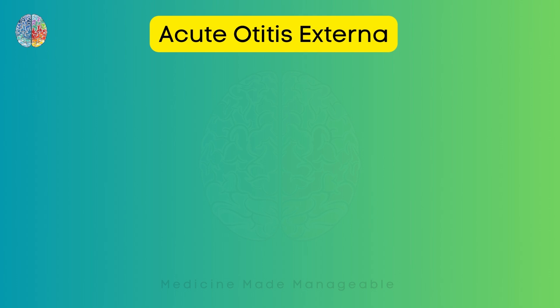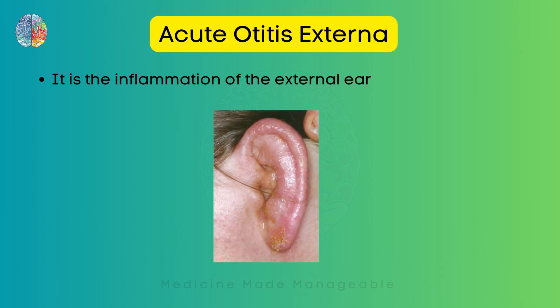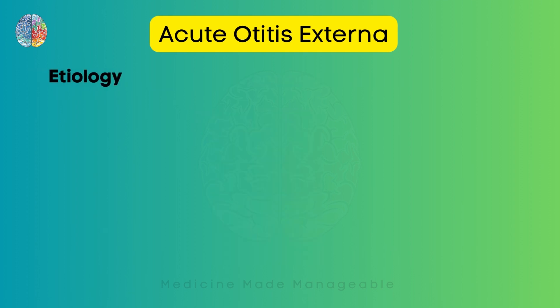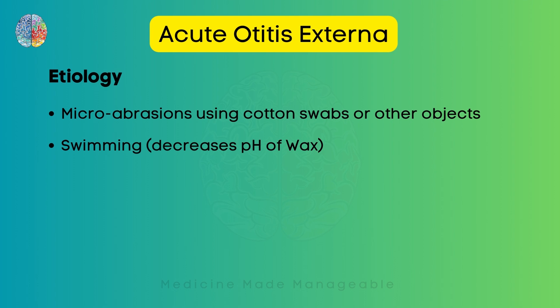Starting with Acute Otitis Externa. The simple definition is that it is the inflammation of the external ear. As you can see in this picture, the whole auricle looks inflamed and there even seems to be some liquid coming out of the EAC. It can be caused by micro-abrasions using cotton swabs or other objects. It can also happen due to swimming, because swimming decreases the pH of the wax. Normally the wax has a pH of 4, which is acidic, and this acidic wax keeps bacteria away from the EAC. If you are swimming a lot and constantly have water in your ear, this will decrease the pH and it will become basic, increasing the chances of infection.